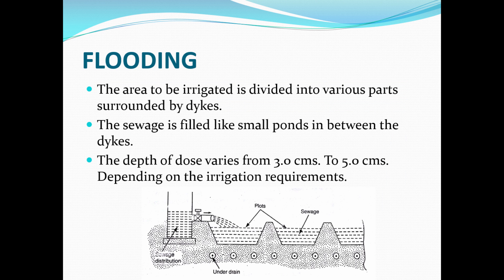Flooding is a process of sewage farming where the area to be irrigated is divided into various parts surrounded by dikes. The sewage is filled into small ponds between the dikes. The depth varies from 3 to 5 cm depending upon the irrigation requirement. The sewage is exposed to solar radiation so the water evaporates, and any remaining liquid penetrates and goes through underground drainage ways.